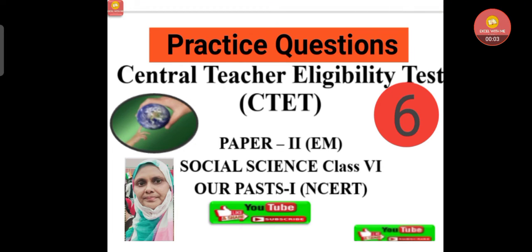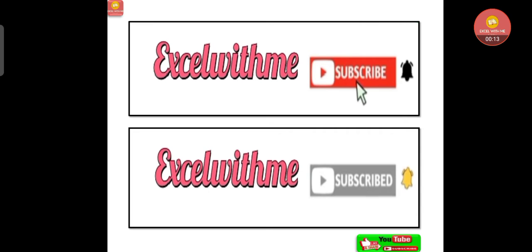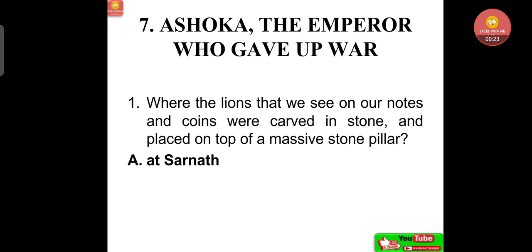Hello learners, this is Habiba with Excel with Me. If you like the video, please do like, share, subscribe and comment below. Let us start today's class — Central Teacher Eligibility Test Paper 2 Social Science, Class 6, Hour Pass 1 in CTET Chapter 7: Ashoka the Emperor Who Gave Up War. Let us start with the practice questions.